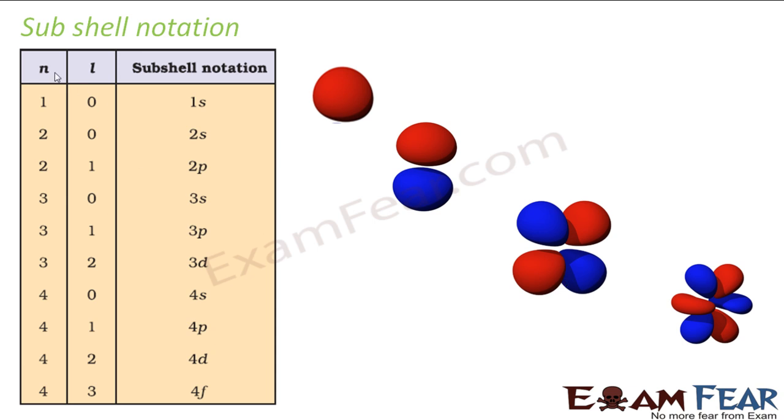Same thing we are doing here. For n is equal to 1, I have L is equal to 0, so it is called 1s something like this. For n is equal to 2, I can have L is equal to 0 or 1, so 2s, 2p. For n is equal to 3, I can have L to be 0, 1 or 2, 3s, 3p, 3d.